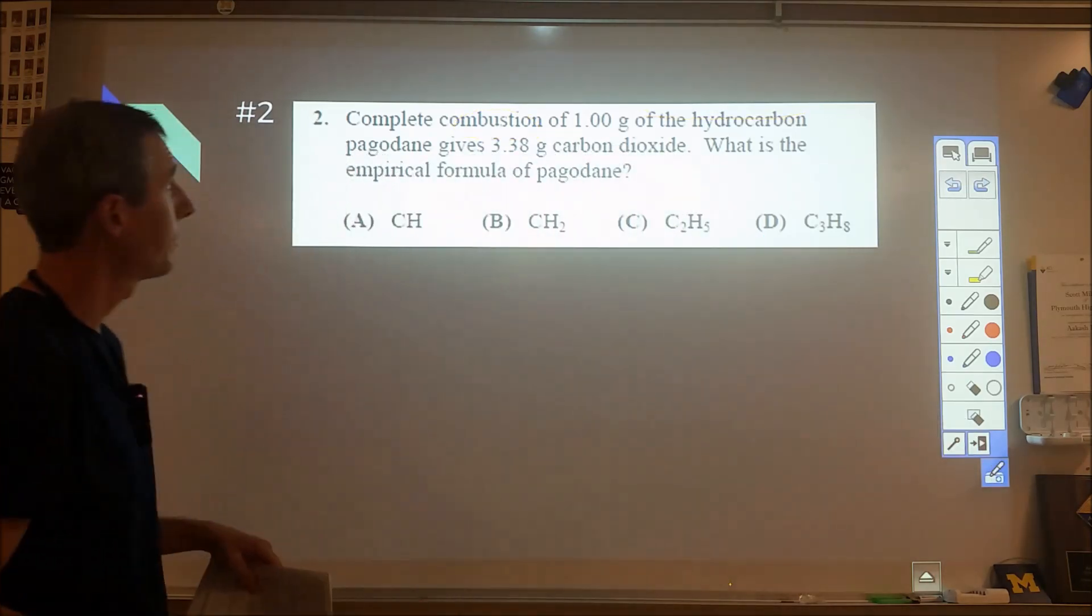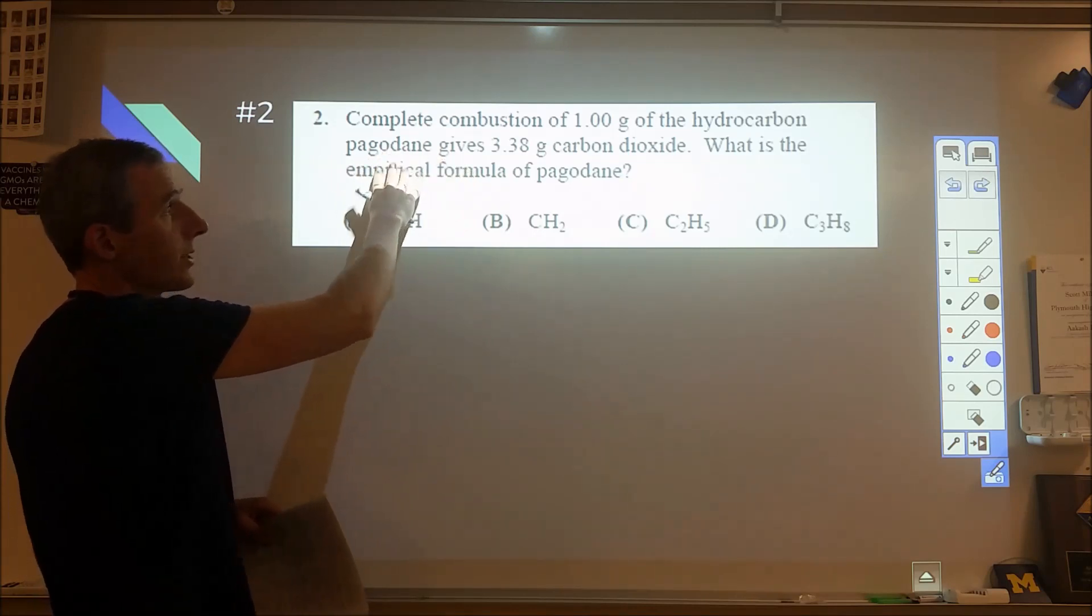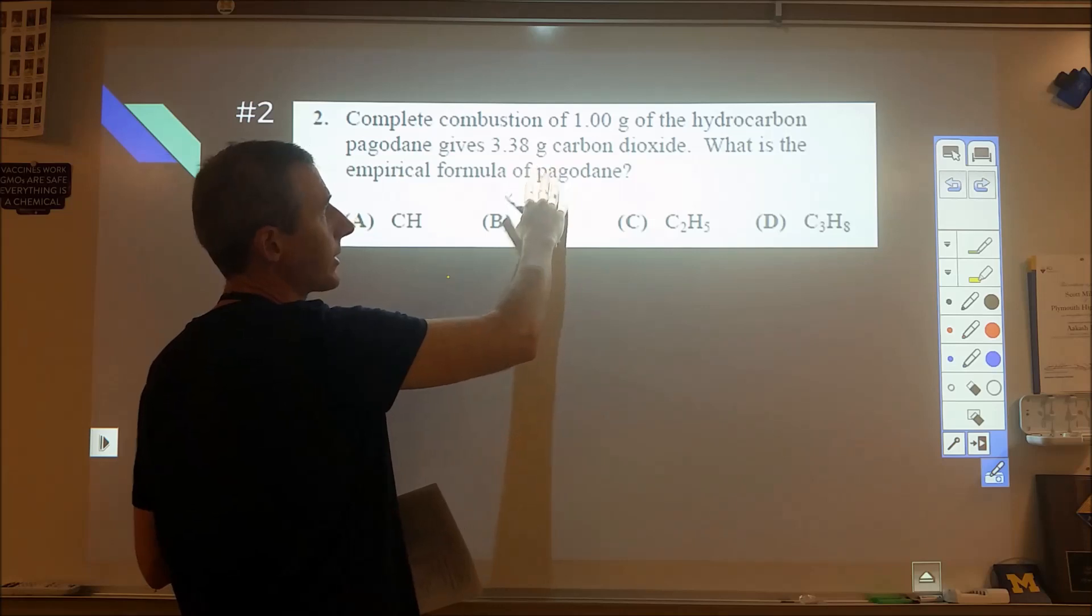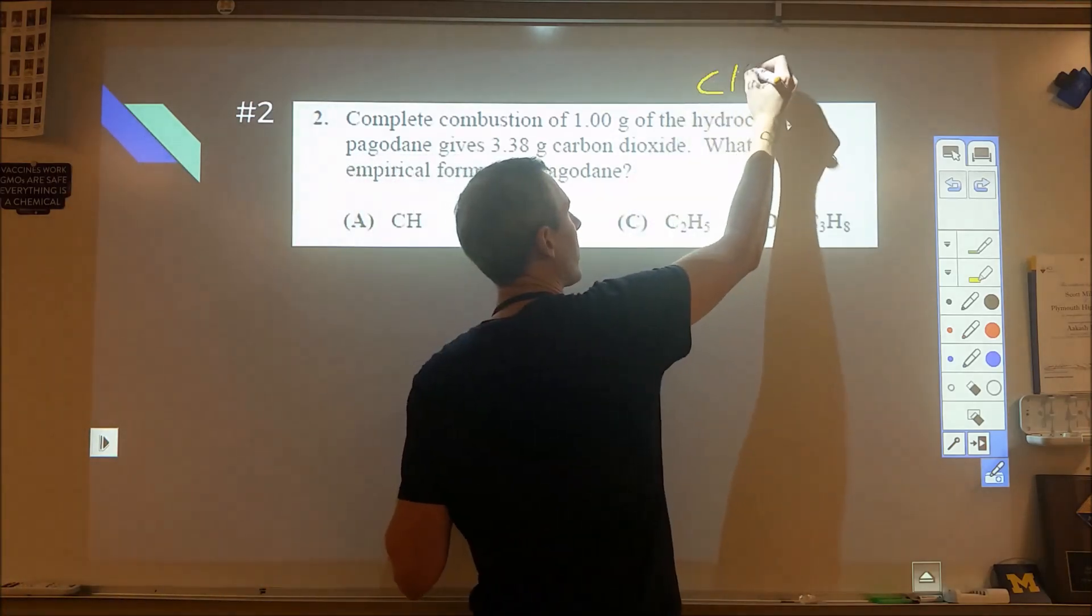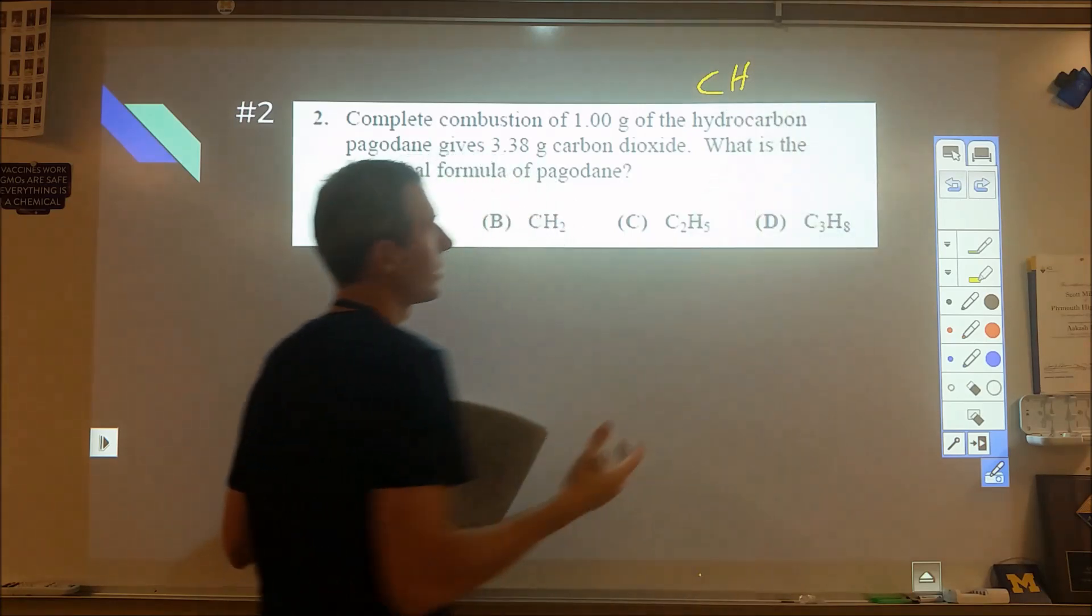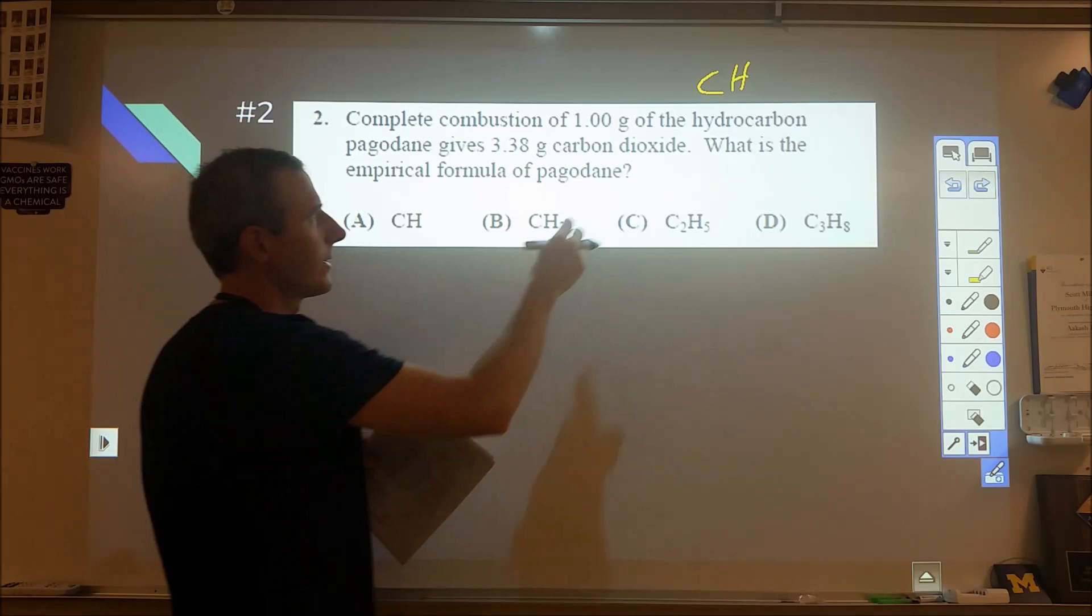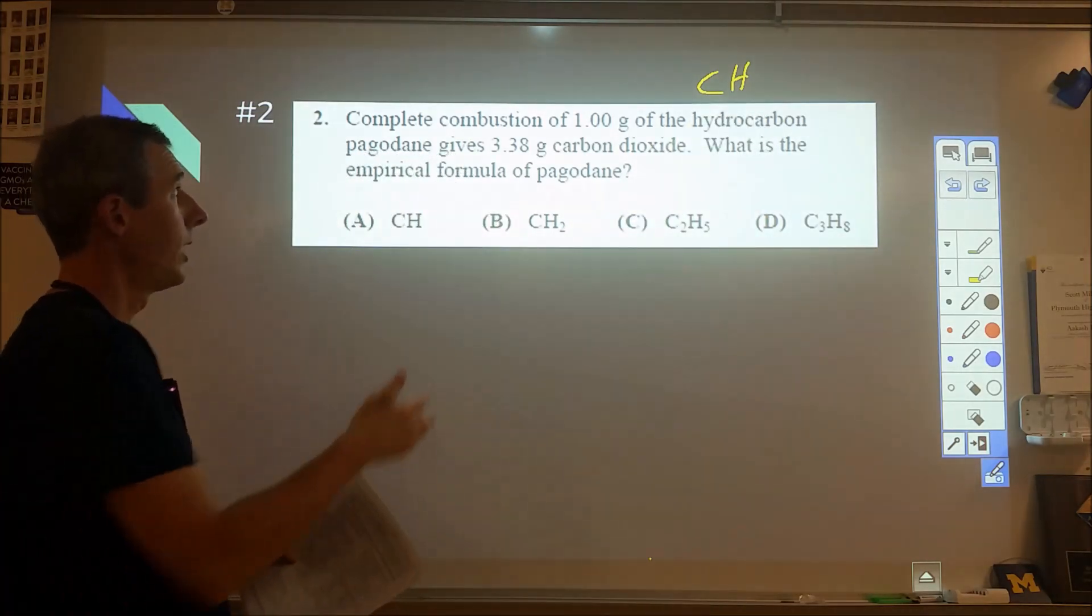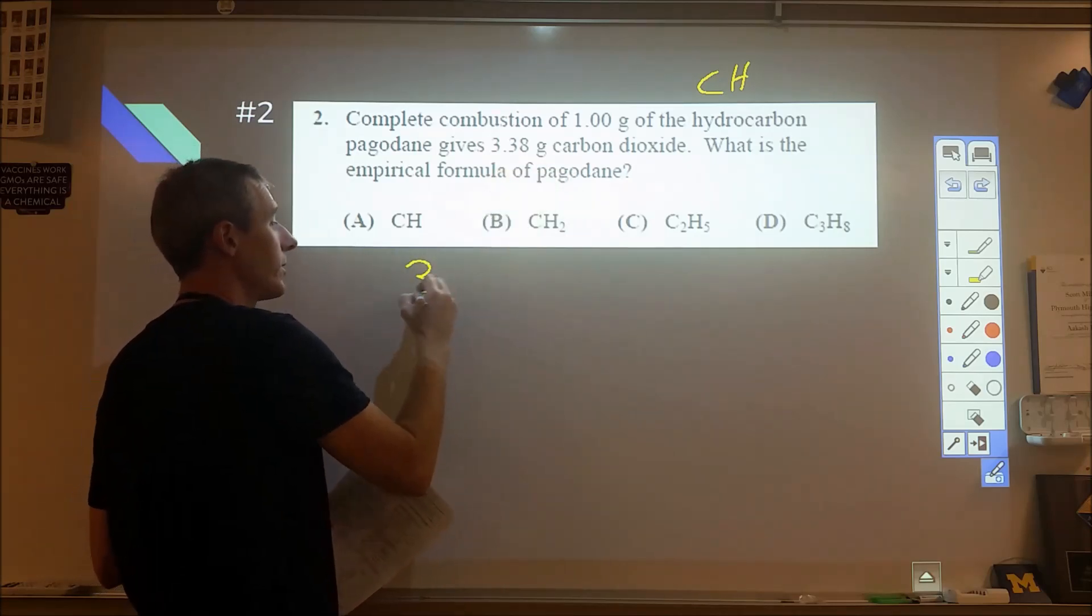Number two, we're looking at combustion of one gram of a hydrocarbon. It gives us the amount of carbon dioxide. So hydrocarbon, you want to be wary. Is it just carbon and hydrogen, or is there also oxygen? There's nothing about water in this case, so that inclines us to think it's probably going to be about those two. The only information we're given is 3.38 grams of carbon dioxide.